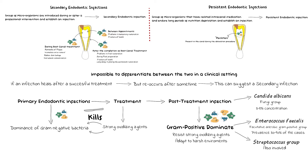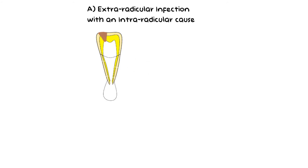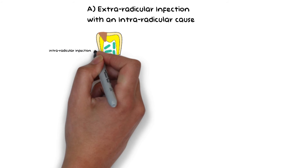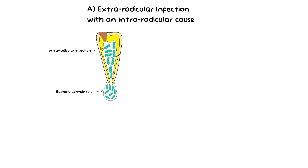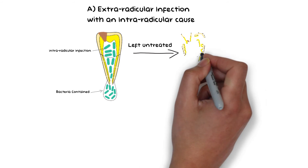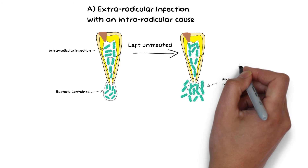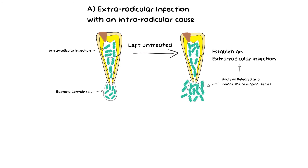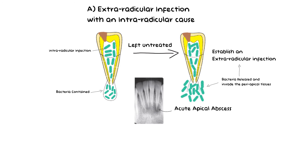Now let's briefly go through extra-radicular infections. There are two ways an extra-radicular infection can occur depending on the origin or cause. One is when it occurs due to an intra-radicular cause: periapical periodontitis that arises as a result of an intra-radicular infection acts as a defense mechanism, preventing bacteria from gaining access to surrounding peri-radicular tissues. However, if treatment of the intra-radicular infection is delayed, bacteria can overcome this defense barrier and invade the surrounding peri-radicular tissues, establishing an extra-radicular infection. The most common form of extra-radicular infection is the acute apical abscess, which is mostly dependent on an intra-radicular cause.